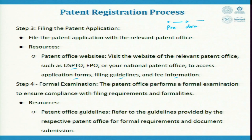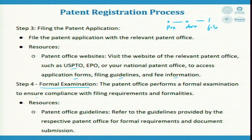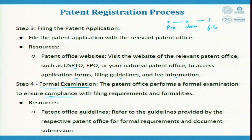After you file, it undergoes a formal examination. The patent office performs a formal examination to ensure compliance with filing requirements and formalities. It checks whether what you have done is renowned, relevant, or unique. The resources are the patent office guidelines provided by the respective office for formal requirements and document submissions. Formal examination is done as part of step 4.